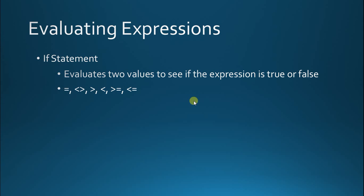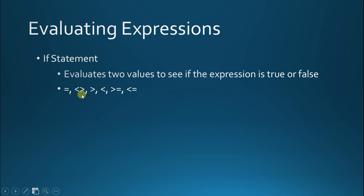These are what we call operators, and you may recognize these from algebra or pre-algebra. I'm going to go over these signs quickly because they probably don't look exactly like what you're used to. The equal sign is pretty obvious — we're saying value one is equal to value two. Then we have not equal to, which is the VBA operator that is the counterpart to equals.